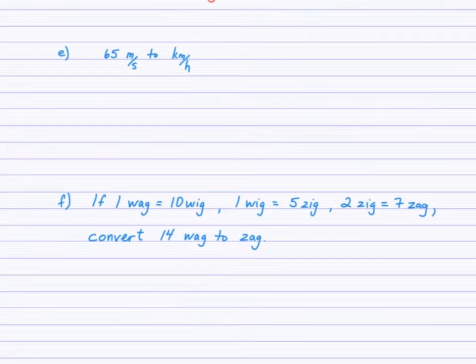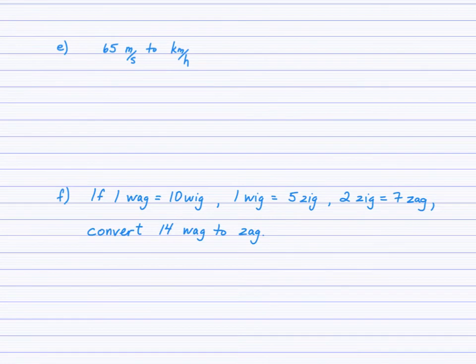Okay, last two examples here. Question E, 65 meters per second, convert that to kilometers per hour. And then part F is a bit of a fictitious, a funny one. If 1 wag equals 10 wigs, and 1 wig equals 5 zigs, and 2 zigs equals 7 zags, convert 14 wags to zags. All right, so these are trickier. Give them a shot. I'll go through them step by step, but try them first. When you're doing part E, convert meters to kilometers, and then convert seconds to hours. And you can string multiple conversion factors beside each other and just keep canceling the units.